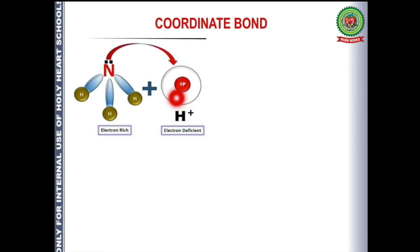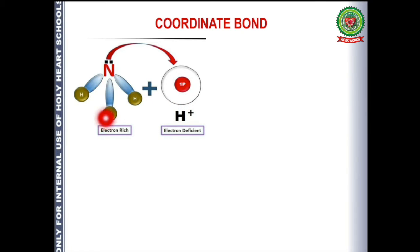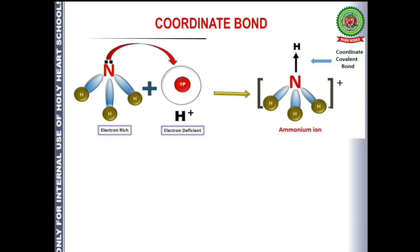Supposing we also have hydrogen, which is electron deficient. Hydrogen has one electron; if it loses that electron it becomes H⁺. So here we have a species which is electron rich and one which is electron deficient. What happens in this case is that the lone pair present on nitrogen will donate to hydrogen, and with the help of this there will be the formation of ammonium ion.